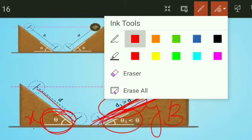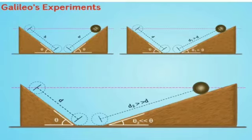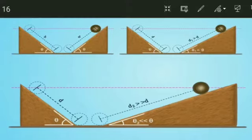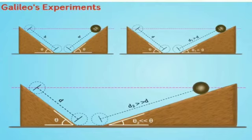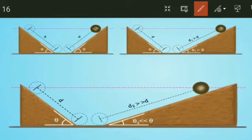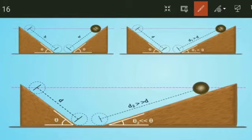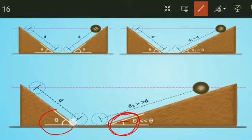This principle is applied in the design of roller coasters and water slides. If the angle of inclination on the first side is large and the second side is small, the object covers more distance. This is how roller coaster shapes are designed using these laws.